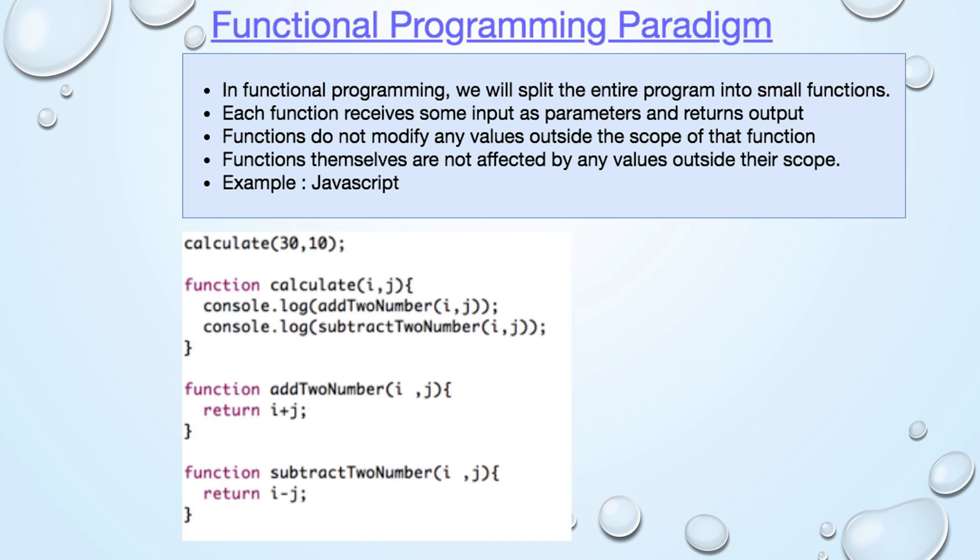The addToNumber function adds two integers. The subtractToNumber method subtracts two integers. So, these two functions have two parameters like i, j. They return the output. So, the calculate function is responsible for adding and subtracting two numbers.